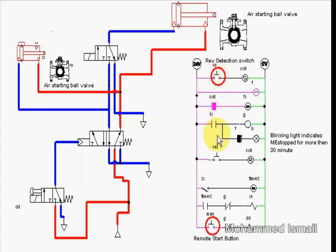In the starting sequence, when the starting push button is pressed, first air goes to the slow turning valve which turns the engine to a specific revolution for a specific time. When the slow turning phase is finished, the main air starting valve is signaled to open to supply the required starting air.